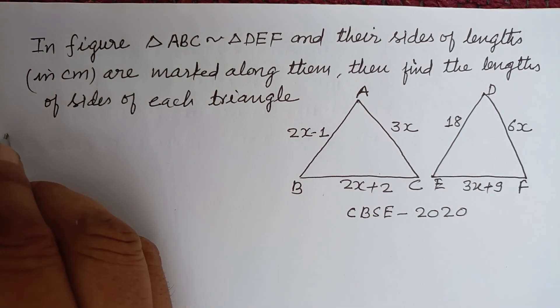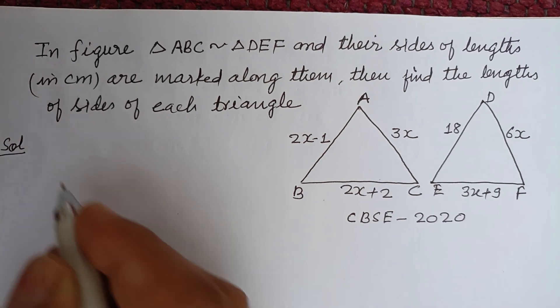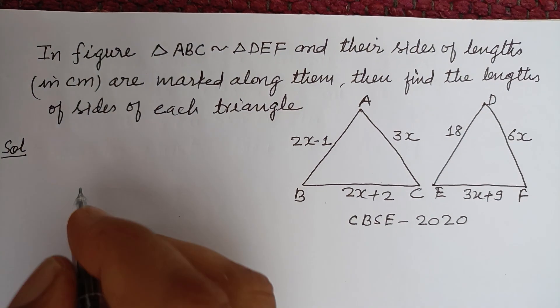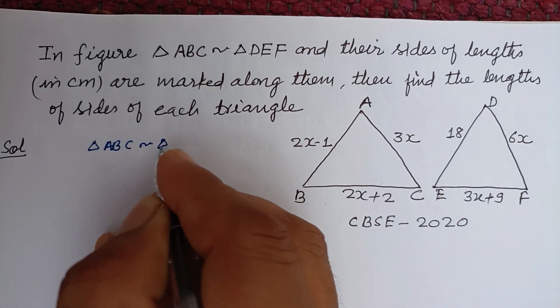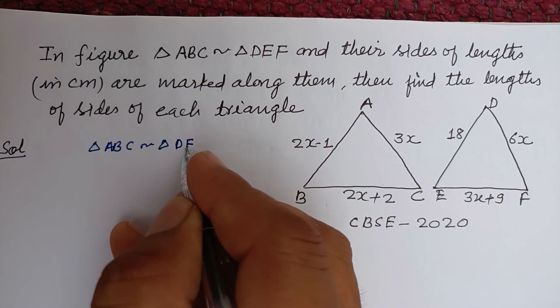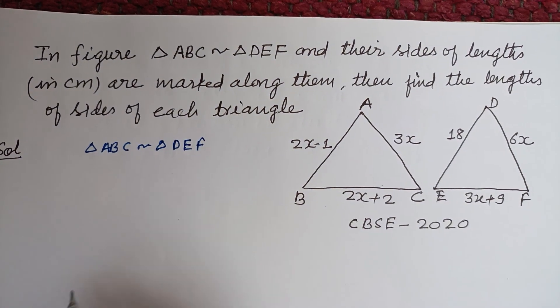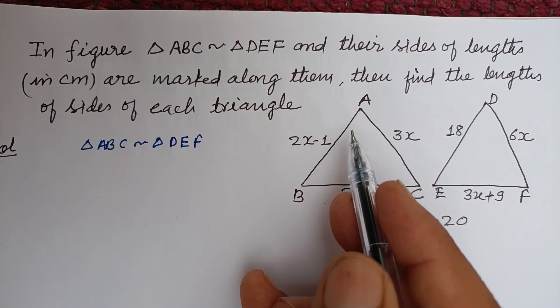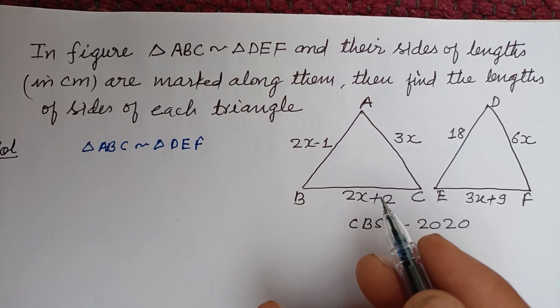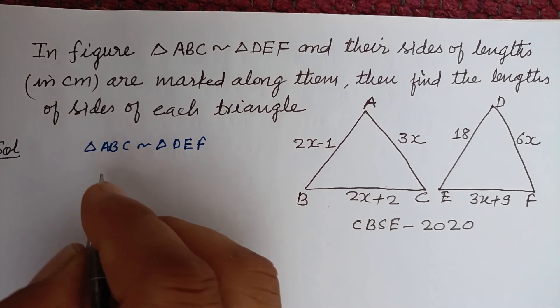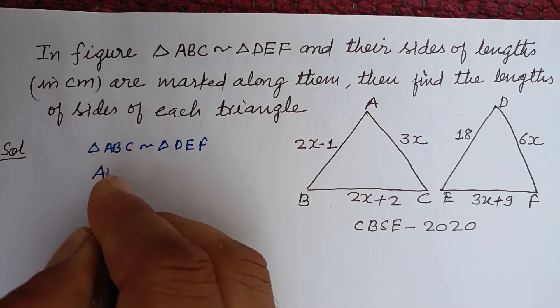So students, here triangle ABC is similar to triangle DEF. And you know that the ratio of respective sides of similar triangles is equal to each other. So AB over DE equals BC over CE equals AC over DF.